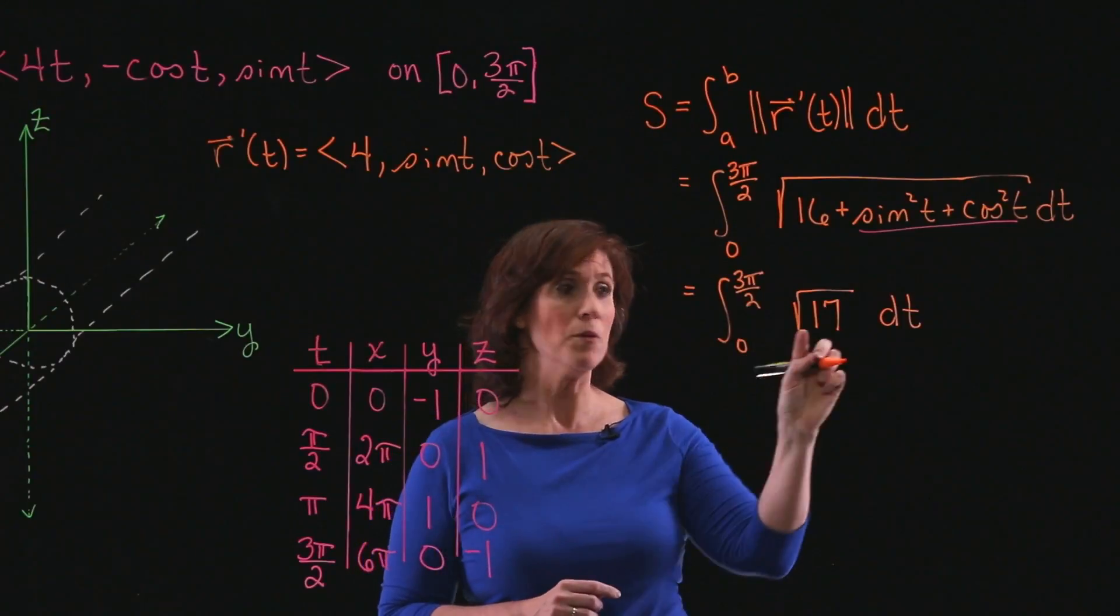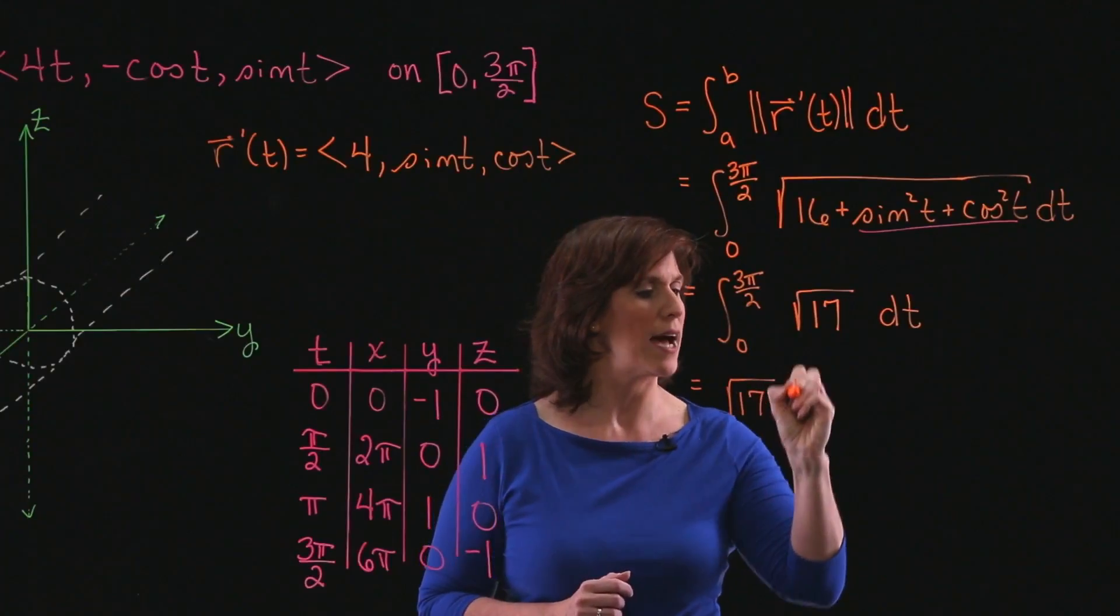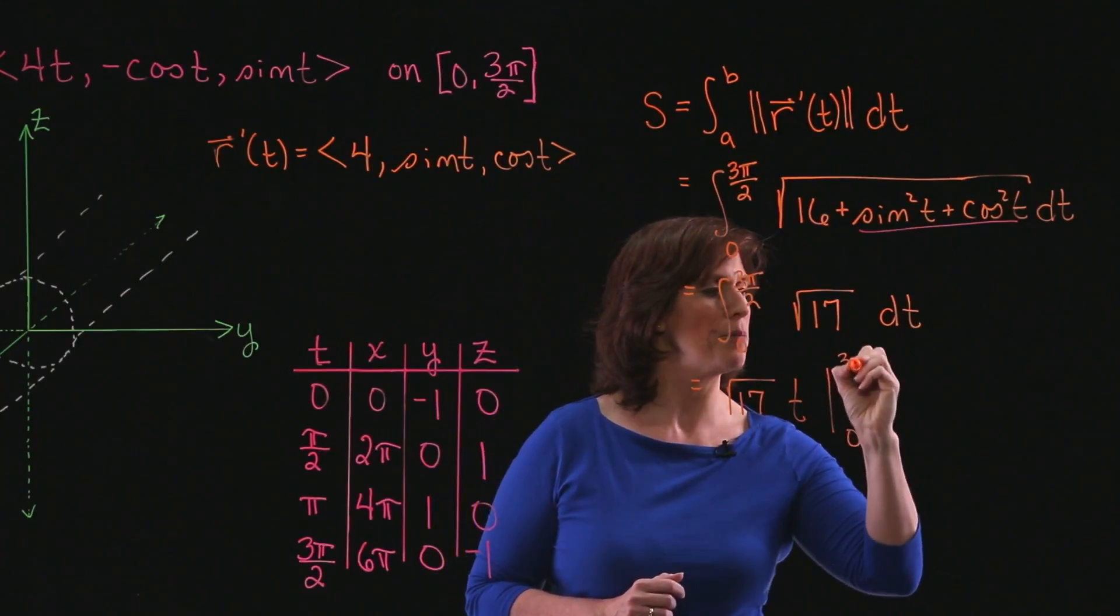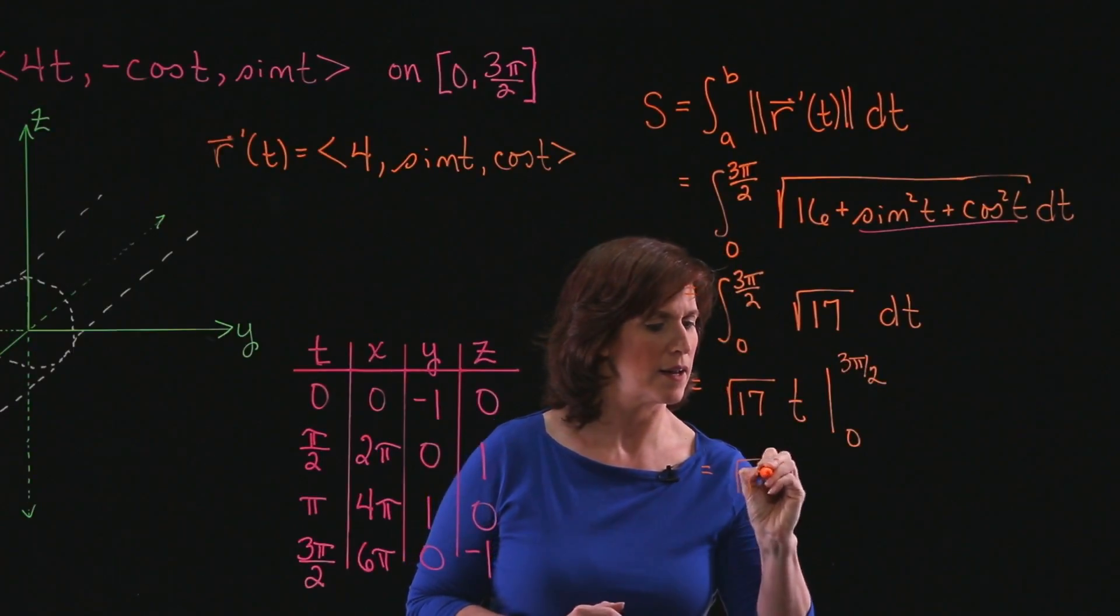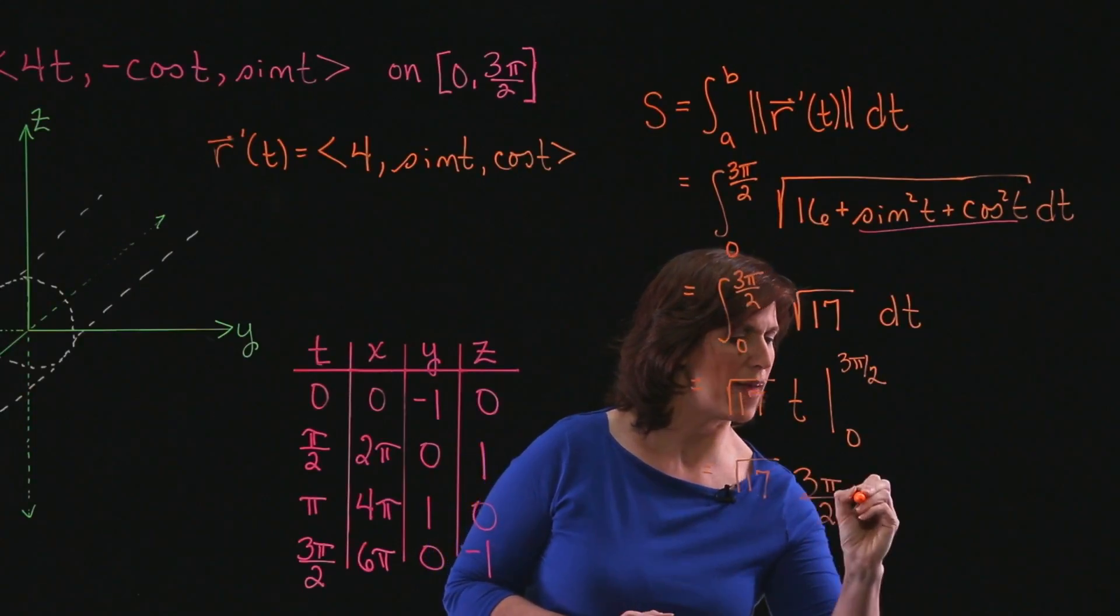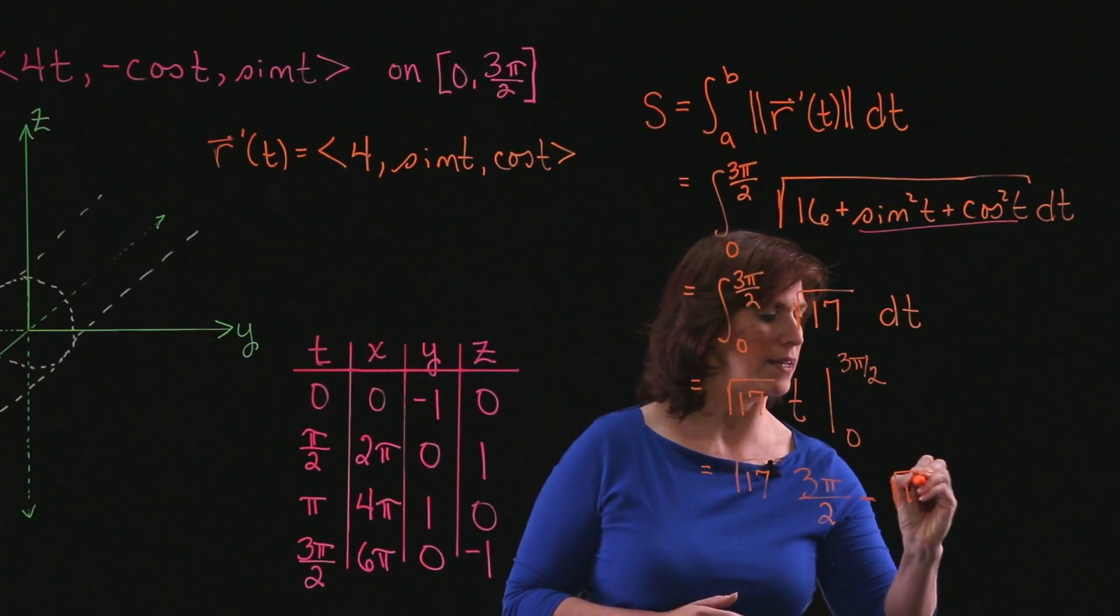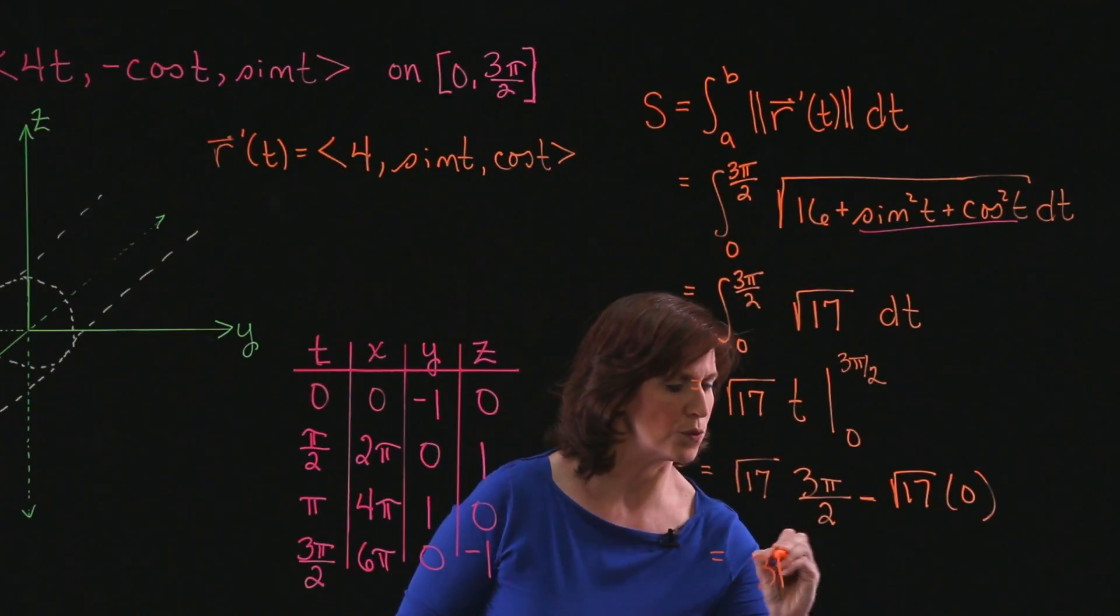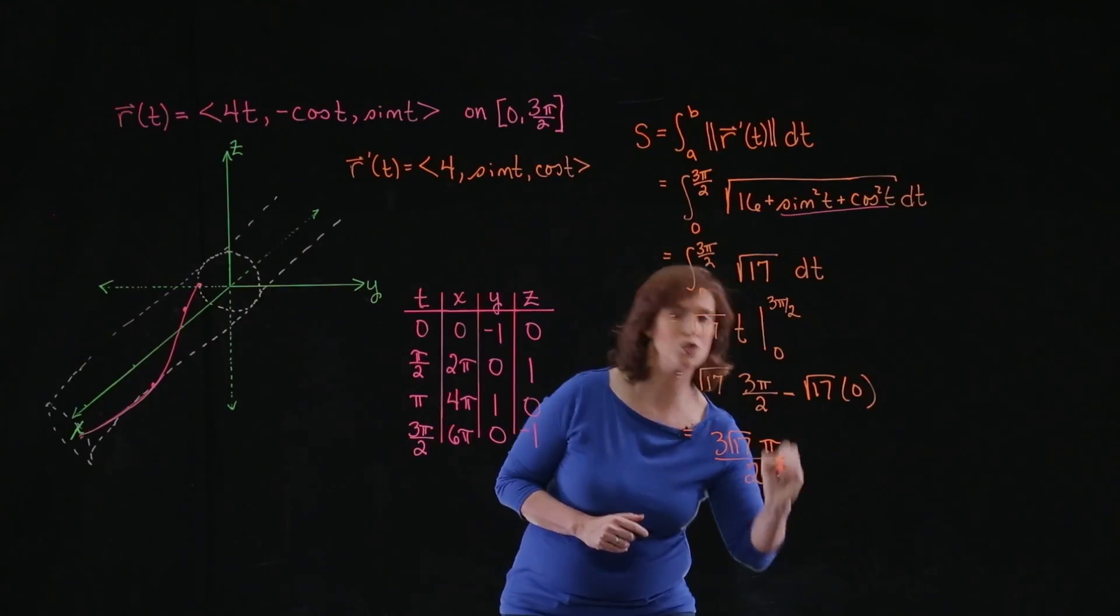Now my integration is fairly simple, because I'm just integrating a constant. So I've got √17 times t evaluated from 0 to 3π/2. Plugging in my upper limit, I'm going to have 3π/2 times √17. And then I subtract what happens when I plug in the 0, which is just √17 times 0. And my final result is 3√17π/2 for my arc length.